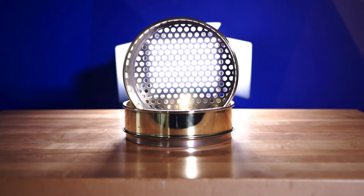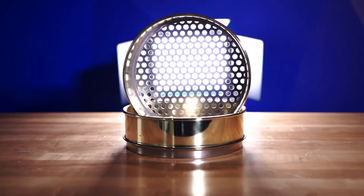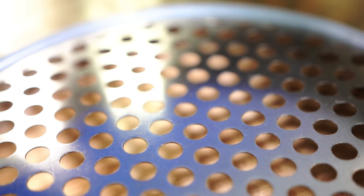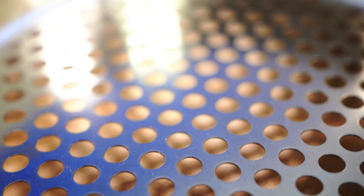Perforated plate sieves are test sieves that have a sheet of metal, either galvanized or stainless steel, with several holes cut out to allow particle screening. These holes are laser cut to ensure accuracy and can be round or square in shape.